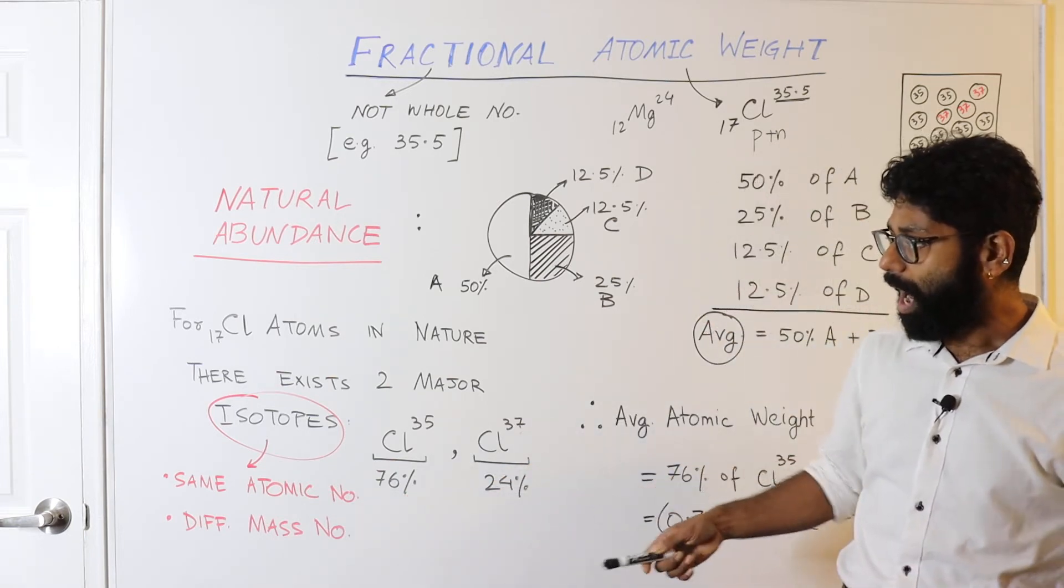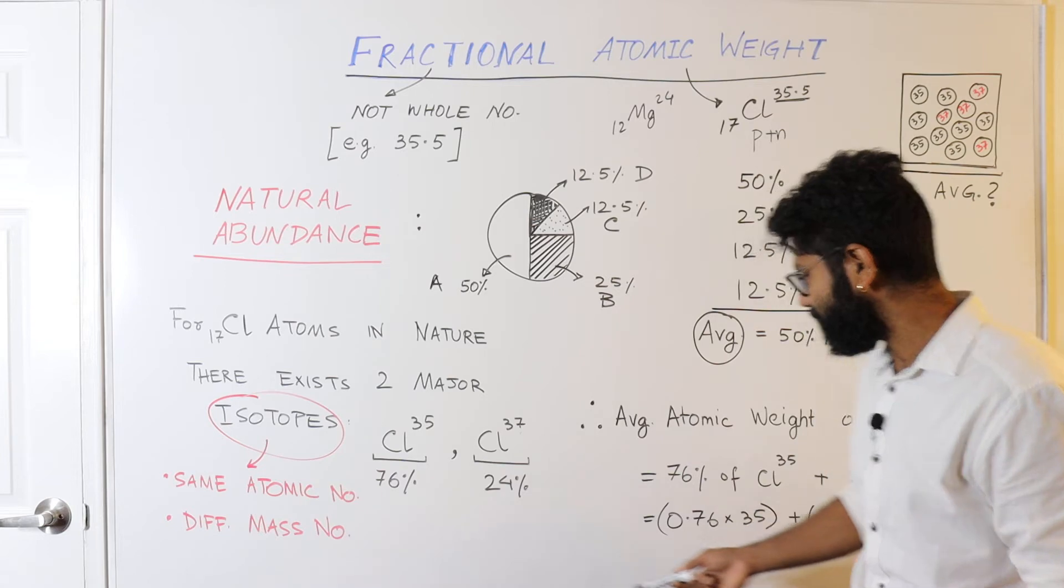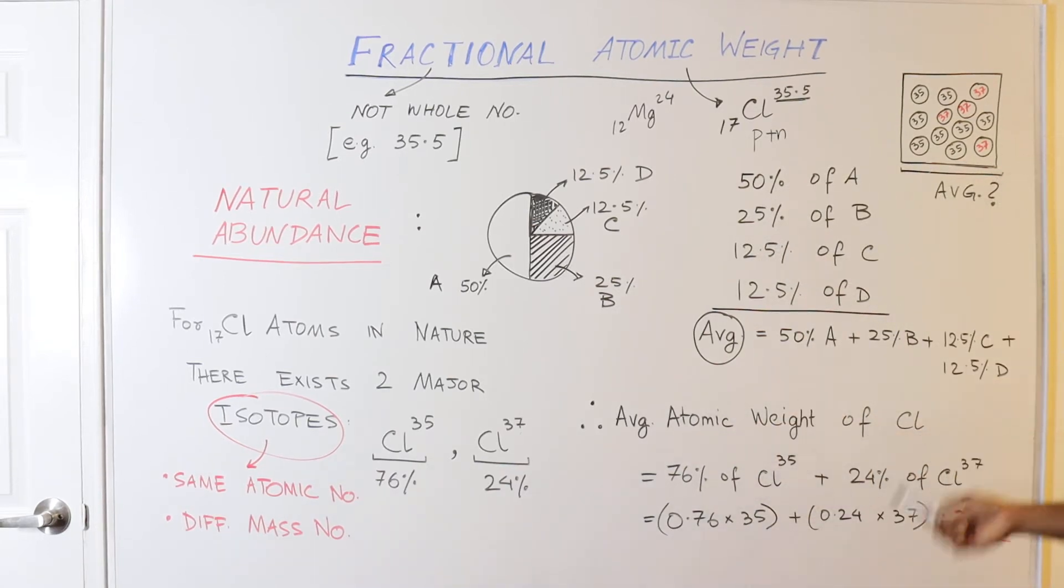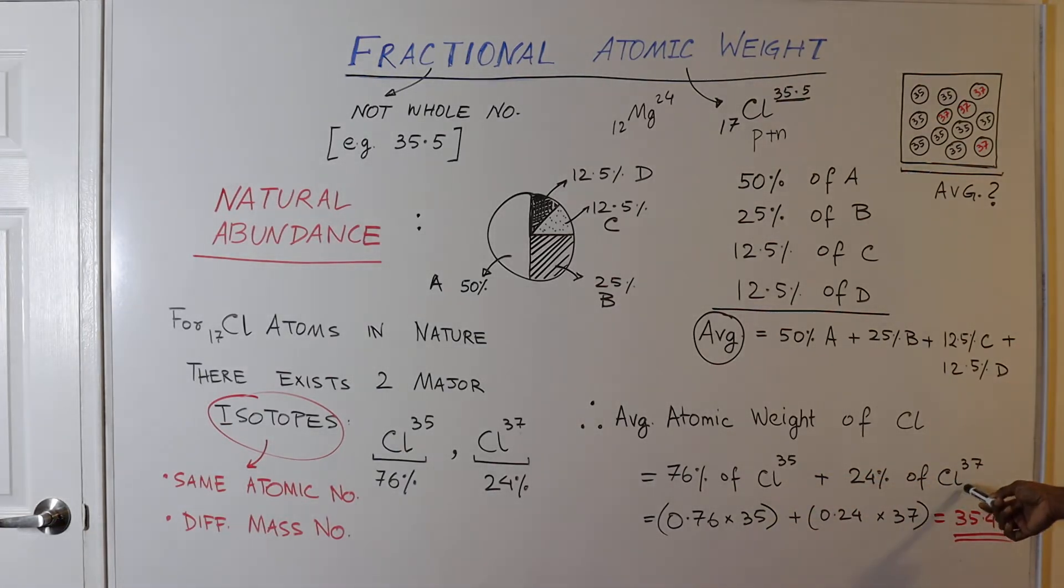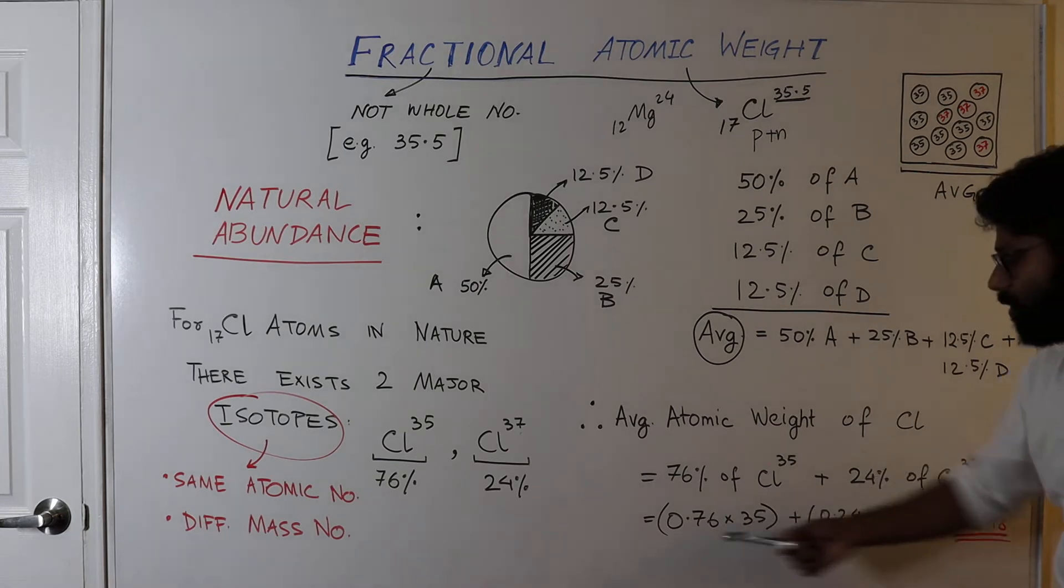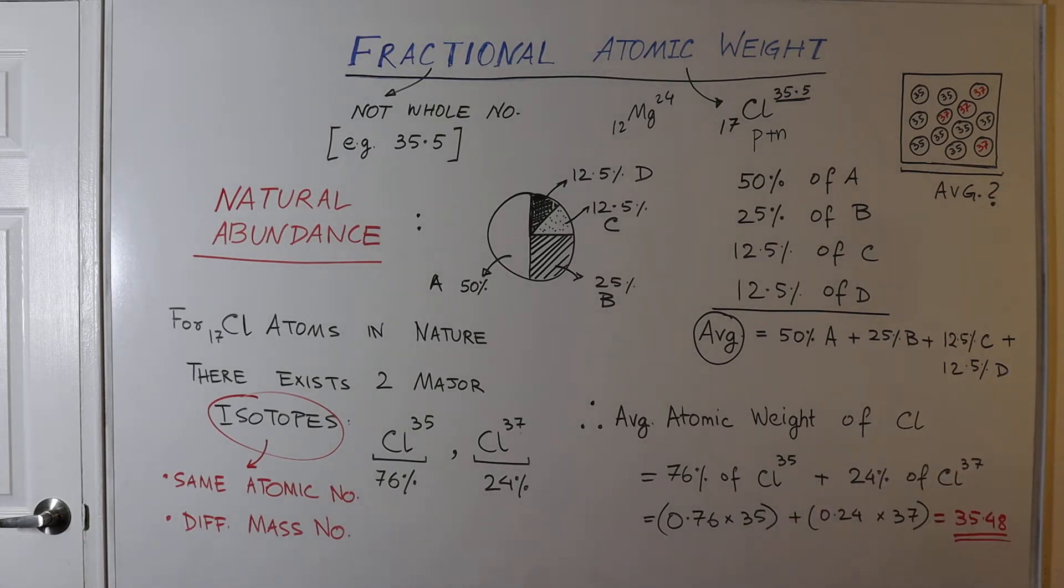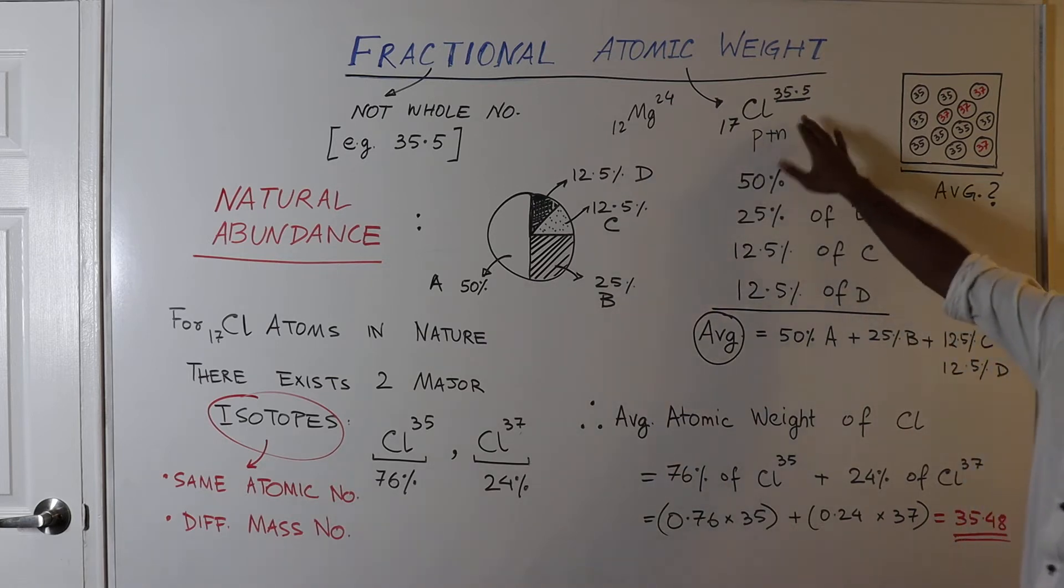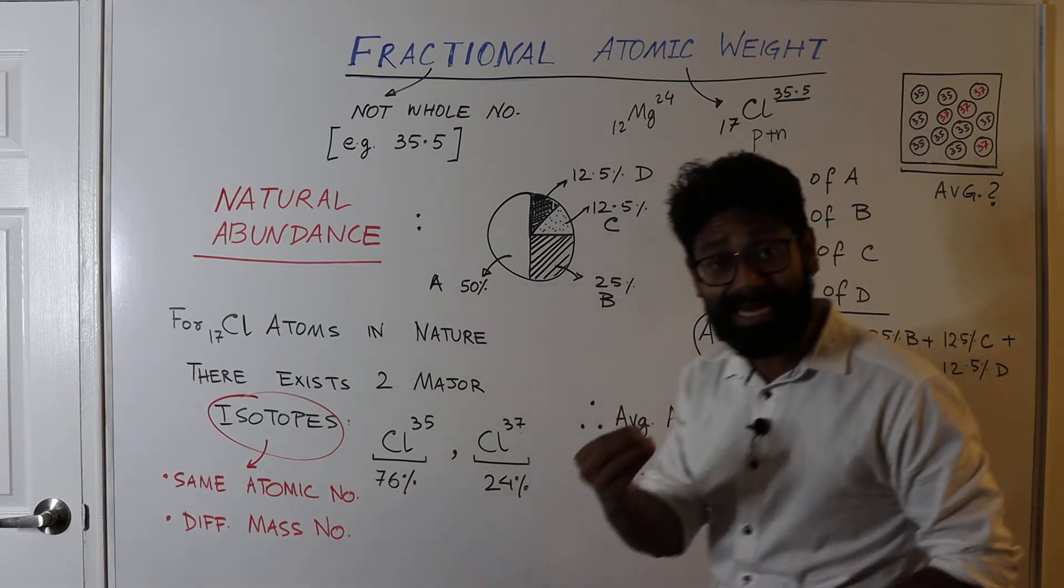Because magnesium is 12-24, so most of the atoms, if not all, say 99% of all magnesium atoms in the universe will have an atomic number of 24, and that is why it's not a problem to just say that the atomic weight of magnesium is 24. But it becomes a problem in the case of chlorine because chlorine has both 35 atomic weight isotopes and 37 atomic weight isotopes in a huge proportion, like 76 and 24. Now how do you find out the average? It's simple, right? The average atomic weight of chlorine will be 76% of the weight of chlorine-35, which is 35, plus 24% of the weight of chlorine-37, which is 37. Do a simple math and you will find out that this average comes out to be 35.48, which we generally write as 35.5.